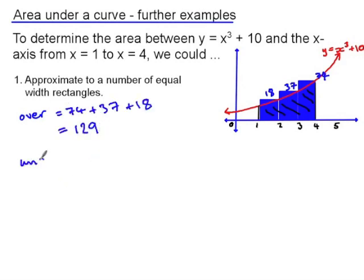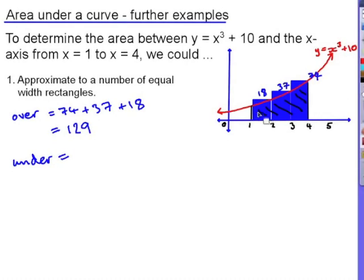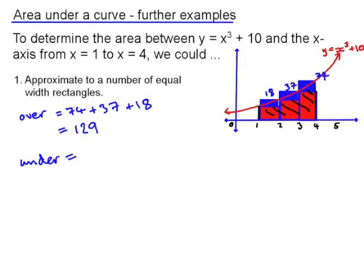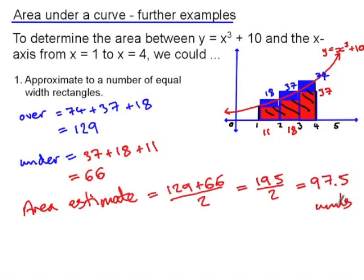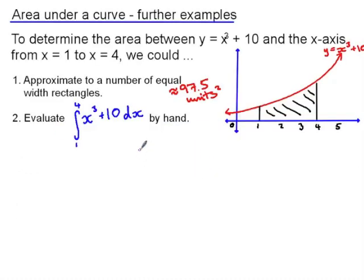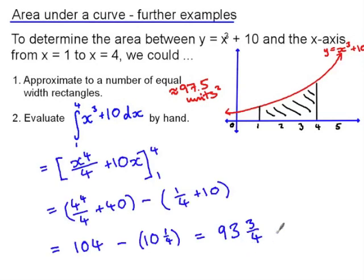The underestimate is found by fitting rectangles just under the curve. This time my tallest rectangle is 37, then 18, and then my smallest rectangle is 11, giving an area estimate of 97.5 square units. A more precise method is to integrate x cubed plus 10 from 1 to 4, giving us an answer of 93 and three quarters square units.